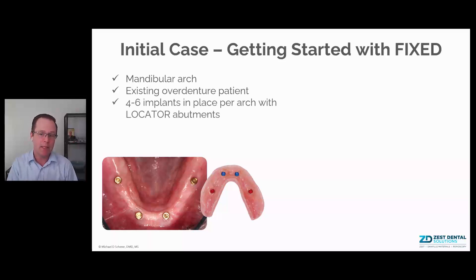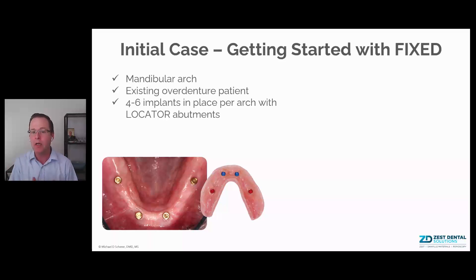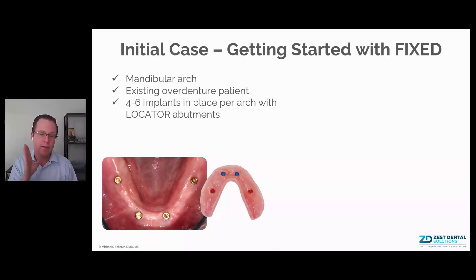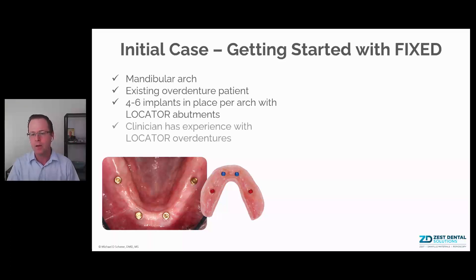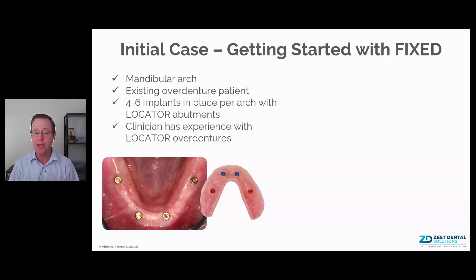Also, the patient has four to six implants per arch with Locator abutments. In my own clinical practice, I try to shoot for four as my minimum standard of care — typically 19, 22, 27, and 30 on the mandible, and on the maxilla usually the first molar, one of the premolars, and canine or lateral site on each side. Also, if you're a clinician with some experience with Locator, whether from dental school, your residency program, or clinical practice, you're a great candidate to jump right into Locator Fixed.